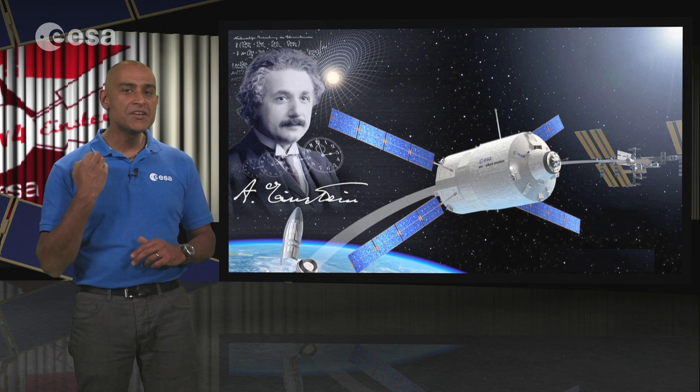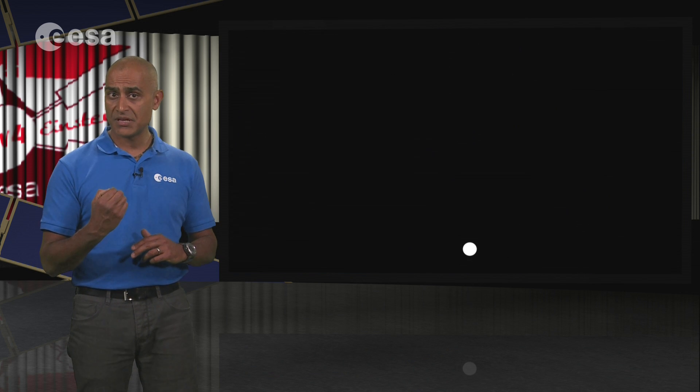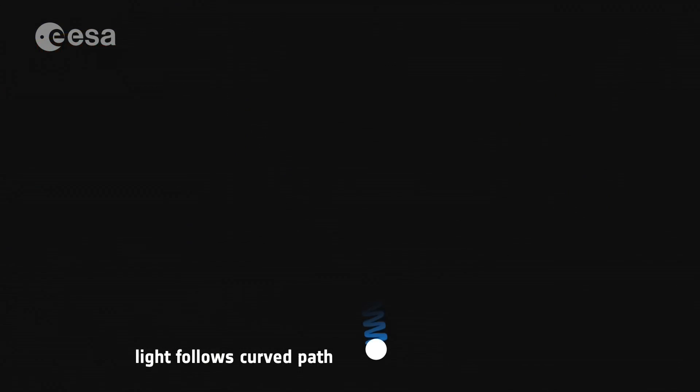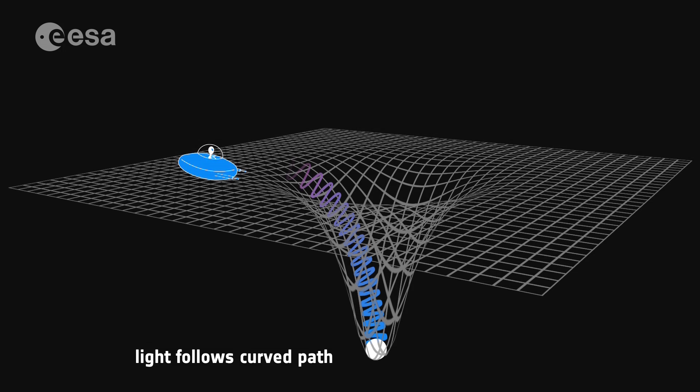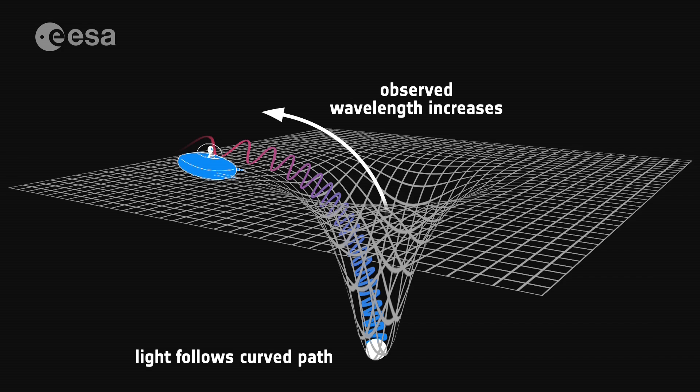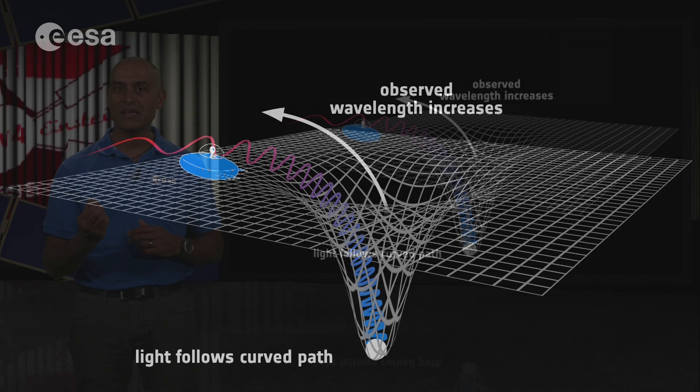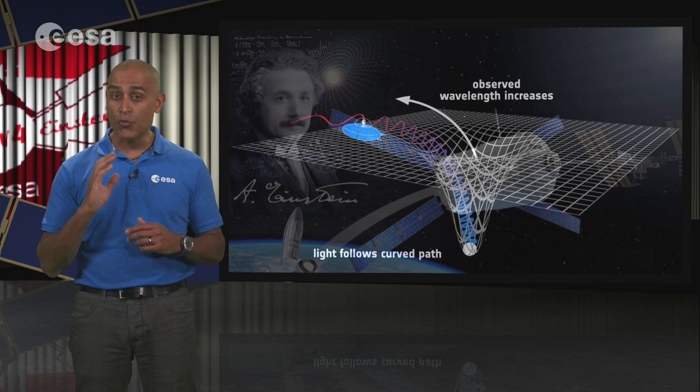Einstein conducted another thought experiment in which light was fired upwards from Earth. The photons must, from the perspective of an observer higher in the gravity field, lose energy to climb higher. And they do so through a lengthening of their wavelength and a reduction in their measured frequency: a gravitational redshift.